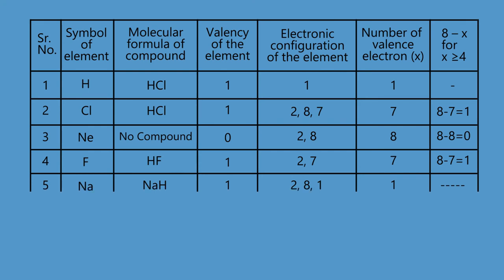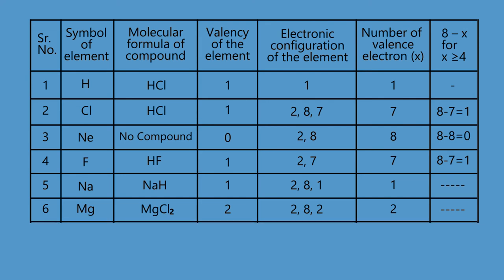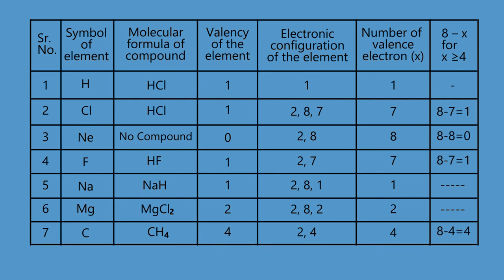In compound NaH, the element sodium has valency 1. Its electronic configuration is 2,8,1 — it contains 1 valence electron. In compound MgCl2, the element magnesium has valency 2. Its electronic configuration is 2,8,2 and number of valence electrons is 2. In compound CH4, the element carbon has valency 4. Its electronic configuration is 2,4 and the number of valence electrons is 4.